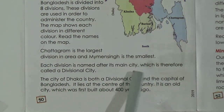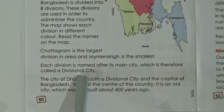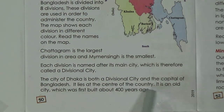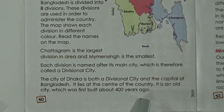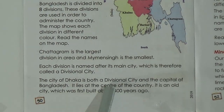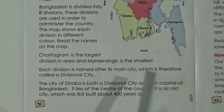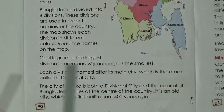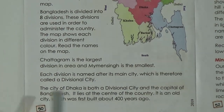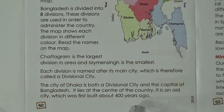Each division is named after its main city, which is therefore called a divisional city. The city of Dhaka is both a divisional city and the capital of Bangladesh. It lies at the center of the country. It is an old city which was first built about 400 years ago.